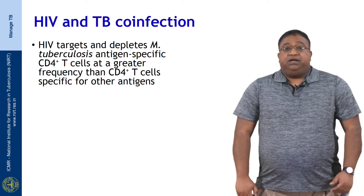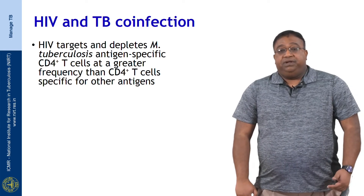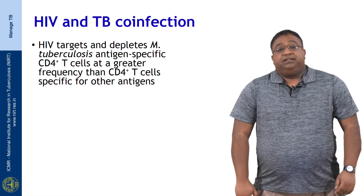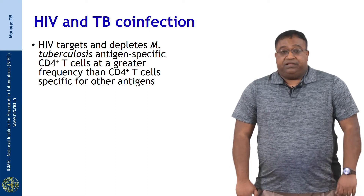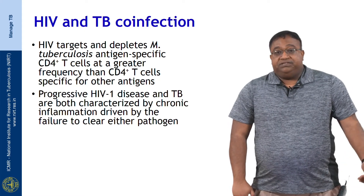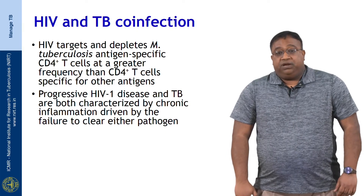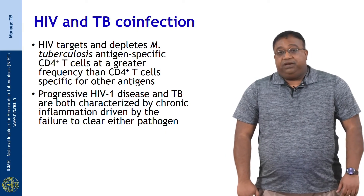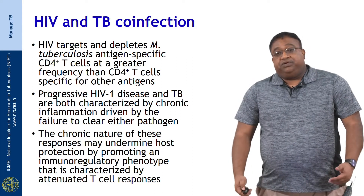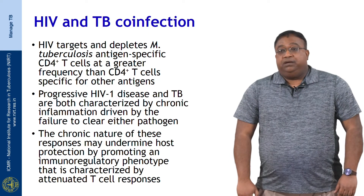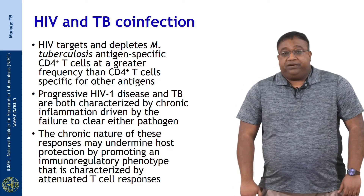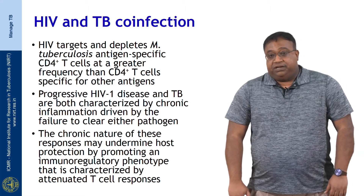Moreover, HIV targets and depletes MTB antigen-specific T cells at a much greater frequency than CD4 T cells specific for other antigens. Both progressive HIV disease and TB are characterized by chronic inflammation driven by the failure to clear either pathogen. The chronic nature of these responses may undermine host protection by promoting an immunoregulatory phenotype characterized by attenuated T cell responses.